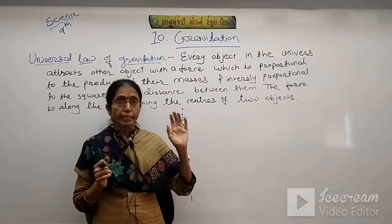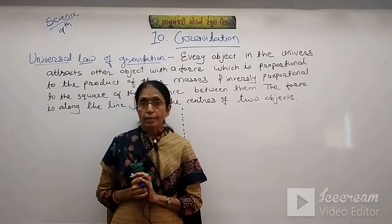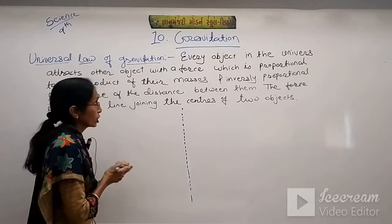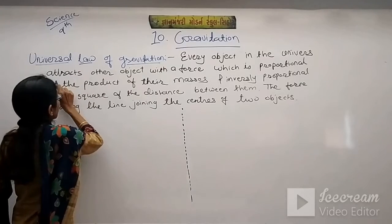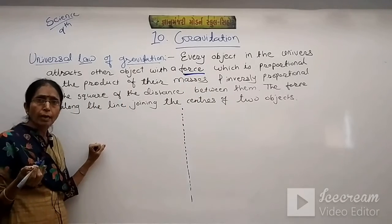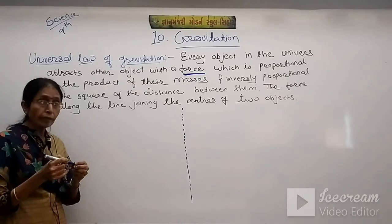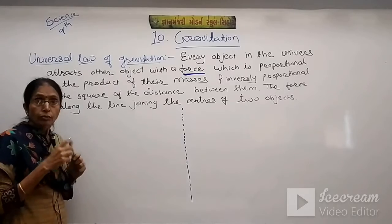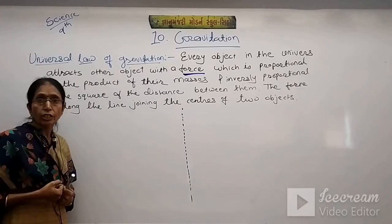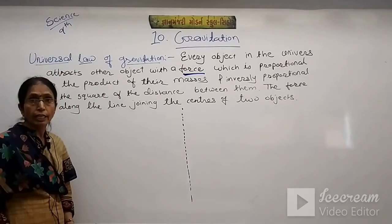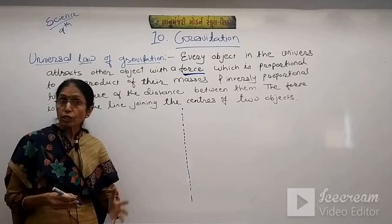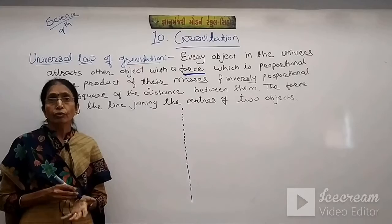Today we will again derive the formula for the universal law of gravitation — that is, the formula involving capital G. Every object in the universe attracts every other object with a force. I gave you the example of the duster and the pen — they also have a force of attraction between them. The reason they fall to the earth and not toward each other is that the gravitational force of the earth is many more times greater than the gravitational force between those two objects.